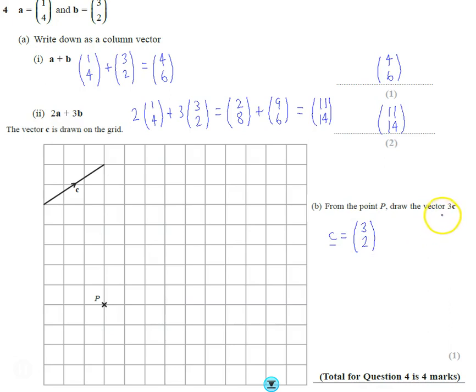To draw the vector 3c, you can think of it in two ways. Either do the vector c three times: 3 along, 2 up - that's once; 3 along, 2 up - twice; 3 along, 2 up - three times. Or you can do what we just did before with scalar multiplication.